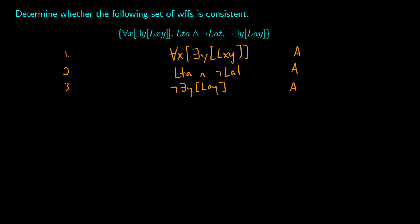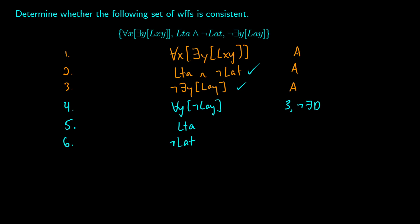First, push the negation through line 3 using not-existential decomposition to get 'for all y, not Lay' on line 4 — from line 3, not-existential decomposition. Next, on line 2 we have a conjunction, so using and-elimination we split it into 'Lta' on line 5 and 'not Lat' on line 6.